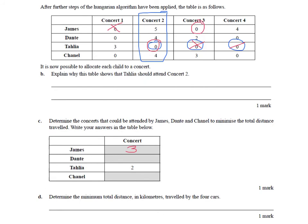Now we can go back and answer these final questions. I'm going to say Dante is going to concert 1 and Chanel is going to concert 4, because it doesn't matter which way round as long as they both go to one of those two. And determine our total distance in kilometers, that would be 56 in total, the values from the original table of the allocated distances.